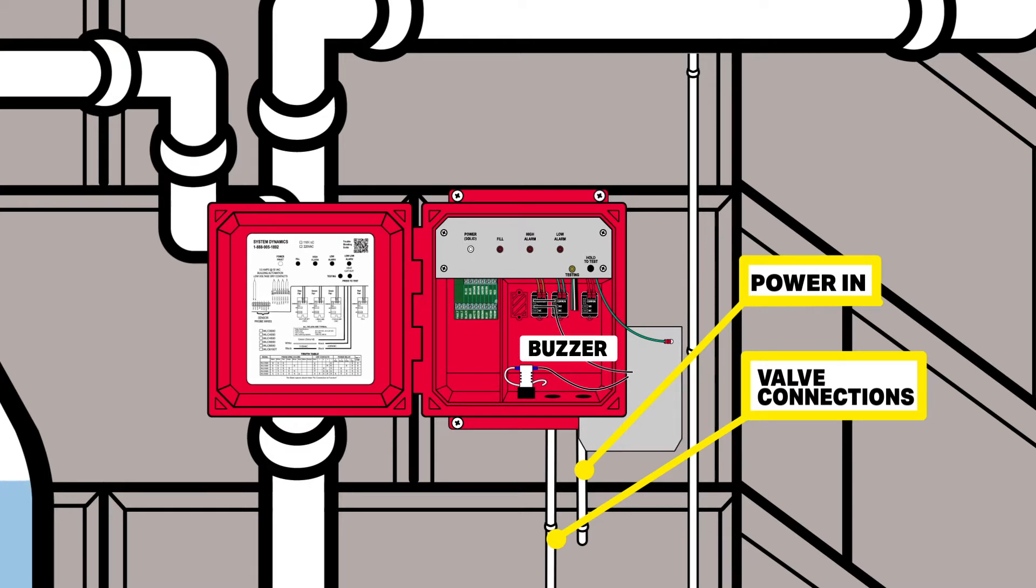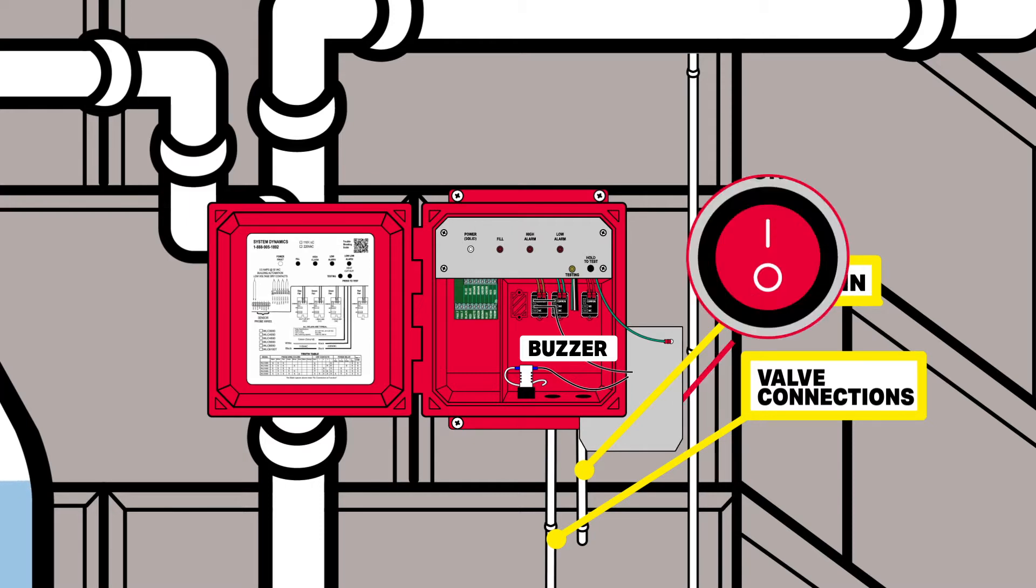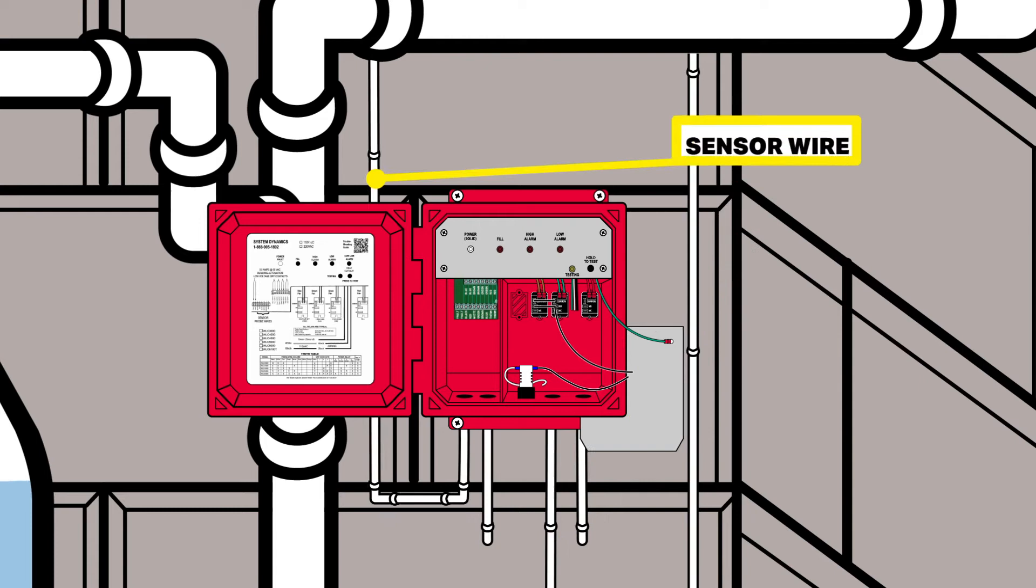There is a pre-wired audible alarm that will enunciate when the low or high alarm is triggered and a silencer switch for this alarm in the panel. The sensor wire and the remote fire panel low-voltage connections should run into the low-voltage compartment.